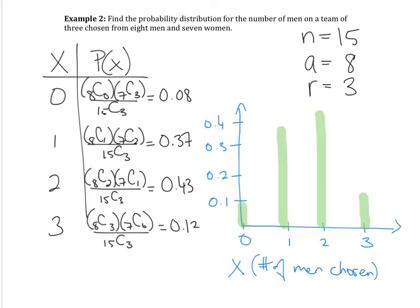Okay, so now looking at your graph, it's increasing and then decreasing right before we've chosen the last man from our group. So it makes sense because as you're decreasing your sample size, you have more of a chance of selecting a male. But right before we get to 3, you notice that the probability drops.